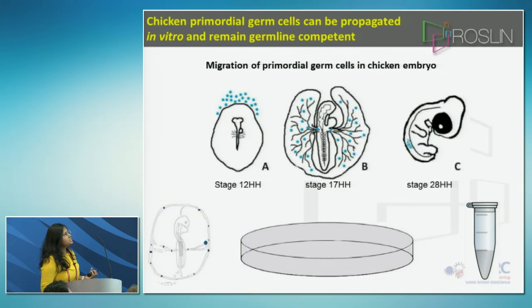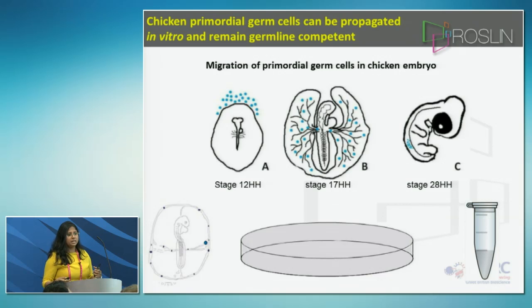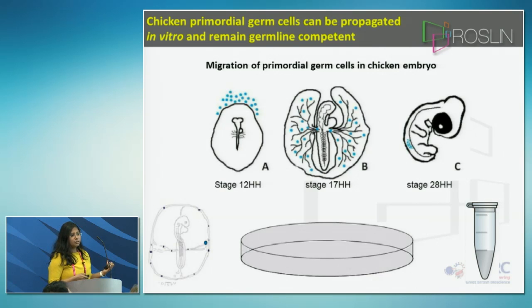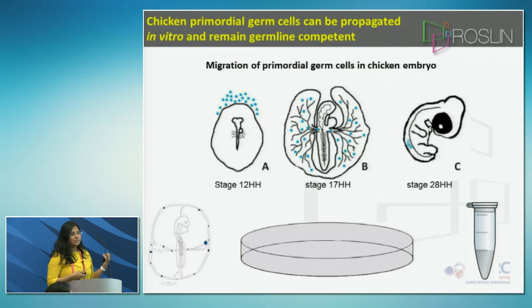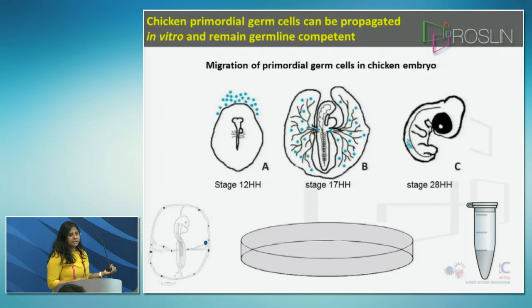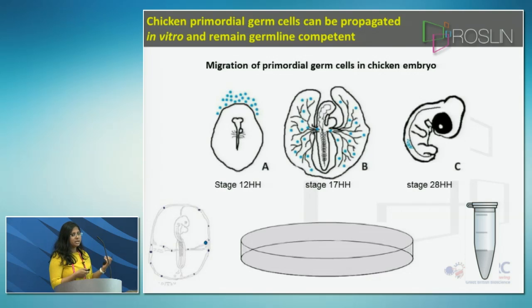A little bit about chicken primordial germ cells: these are the cells which carry genetic information from one generation to another, also called germ cells. They originate from the epiblast region of the developing chicken embryo, enter blood circulation, and migrate throughout the embryo. After some days, at stage 28 of Hamburger and Hamilton, they settle into the germinal ridge area where they differentiate into sperm or egg and continue the lineage. These primordial germ cells can be cultivated in vitro using defined media without losing their potential to develop into a germ cell lineage.